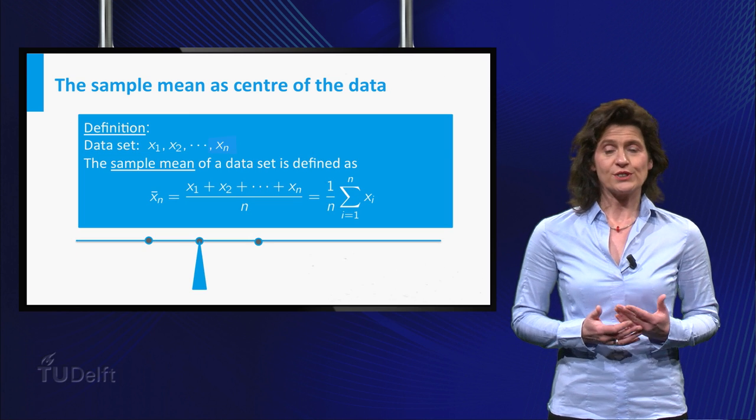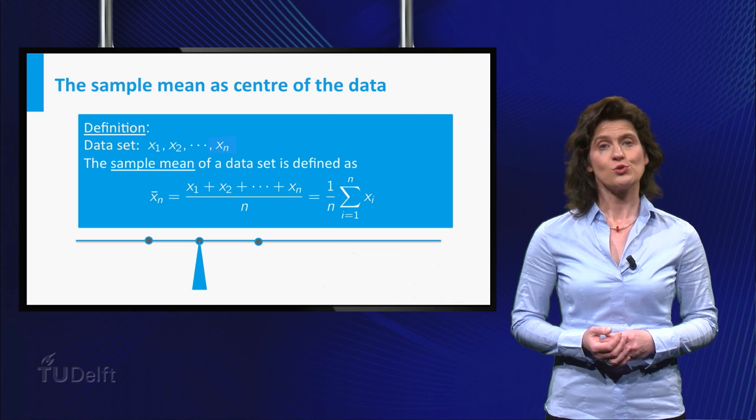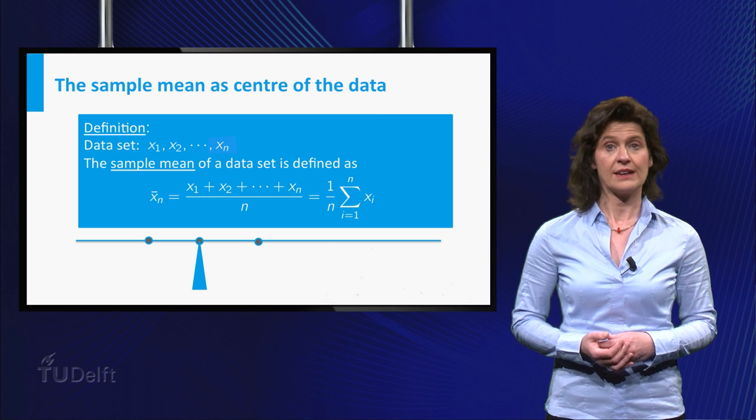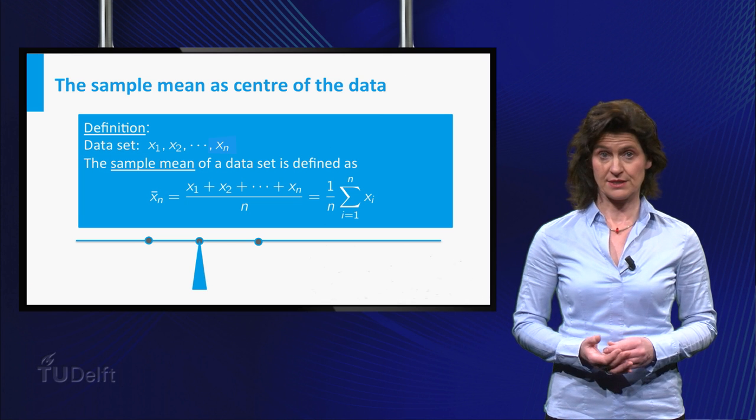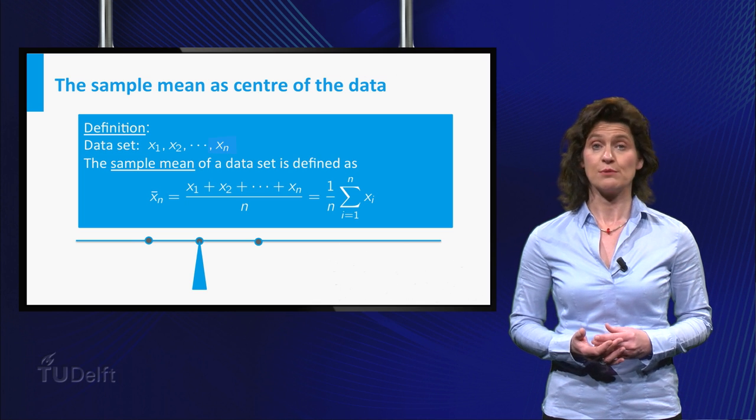If you wish to denote a dataset in general, so without specifying the points with numbers, you write it as x1, x2 up till xn. Here n is the number of values, usually called the sample size. Then the formula for the mean is given using the summation symbol sigma.